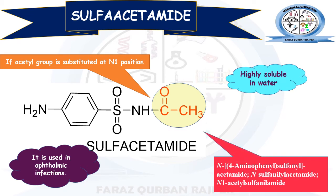The chemical or IUPAC name for sulphacetamide is N-(4-aminophenylsulfonyl)acetamide, representing that the N site is being substituted with the acetamide group. Another name is N-sulfonylacetamide, or N1-acetylsulfonamide, indicating that the N1 site of the sulphonamide is being substituted with the acetyl functional group.